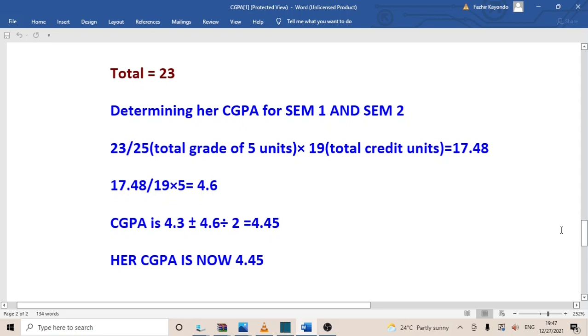And if at all she gets 3.6 to 4.39, that is a second class upper division. And if I thought she gets 2.8 to 3.59, that is a second class lower division. Anything below that, that's a pass.